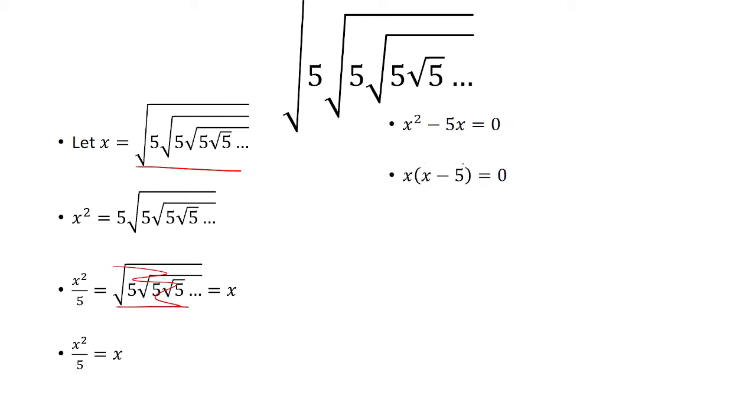Now, factoring out an x, we have x times x minus 5 equals 0.